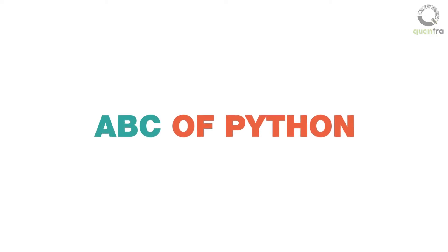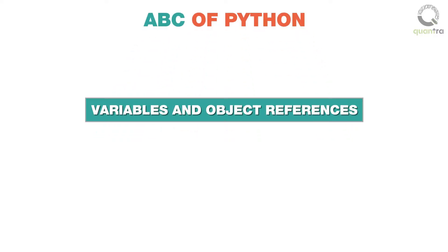Let us begin this journey right from understanding the ABC of Python. Let us first understand variables and object references with the help of an intuitive example.